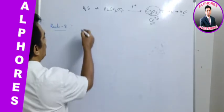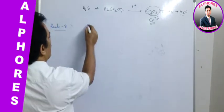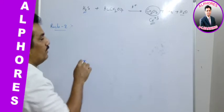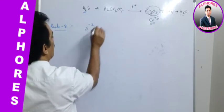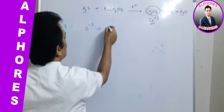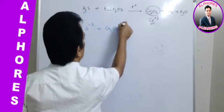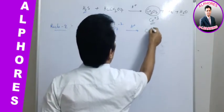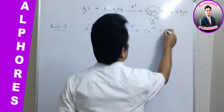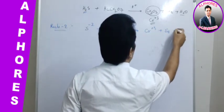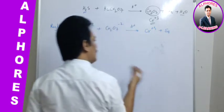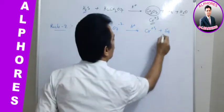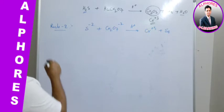For H2S, both hydrogens are removed as H⁺, giving us S²⁻. By removing those, we get Cr2O7²⁻ on the other side, and it is in acid medium. We consider Cr³⁺ and S8. We need not write H2O because that is added by default. This is the skeletal equation.